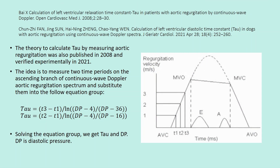The theory to calculate tau by measuring aortic regurgitation was also published in 2008 and verified experimentally in 2021. The idea is to measure two time periods on the ascending branch of the continuous wave Doppler aortic regurgitation spectrum and substitute them into the following equation group: TAU = (T3 − T1) / ln((DP − 4) / (DP − 36)), and TAU = (T2 − T1) / ln((DP − 4) / (DP − 16)).